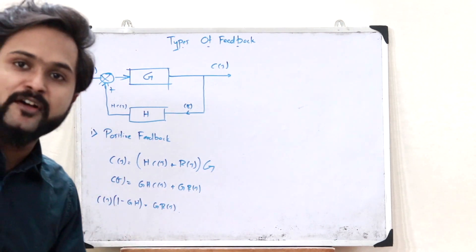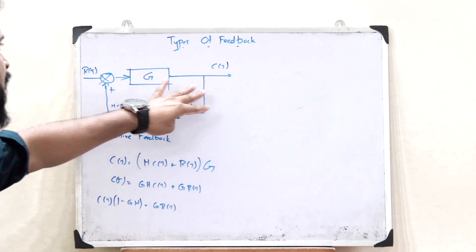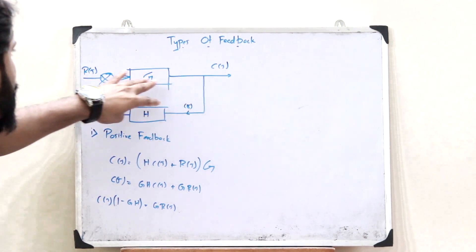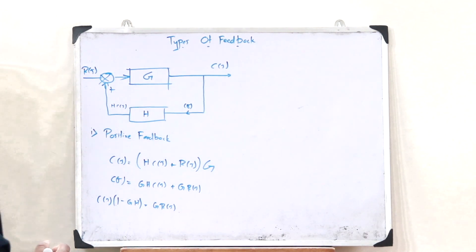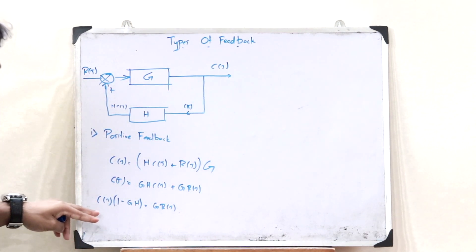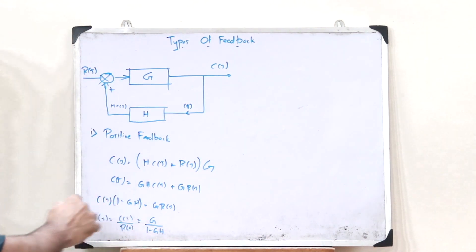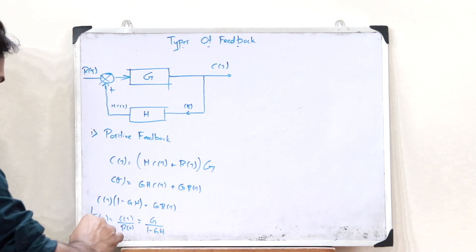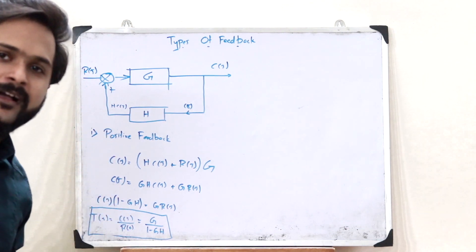A transfer function is given as the ratio of the output signal to the input signal, that is C of S divided by R of S. Therefore, from this particular equation, we get the transfer function T of S equals C of S divided by R of S, which equals G divided by (1 minus GH). This is the transfer function in the case of a control system having positive feedback.